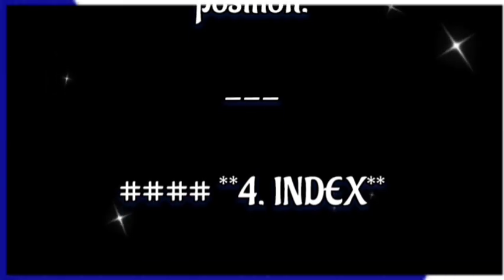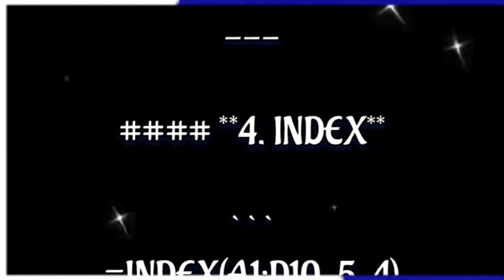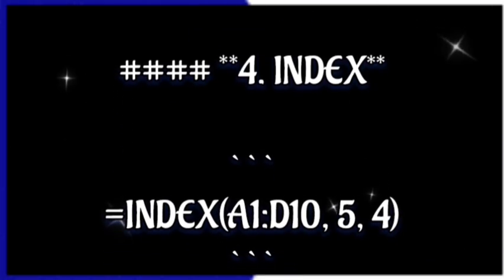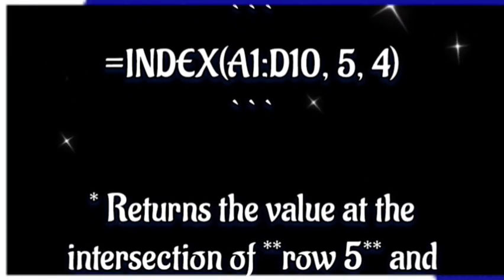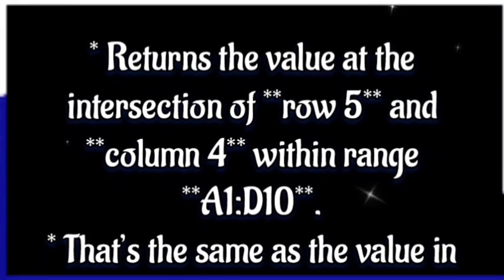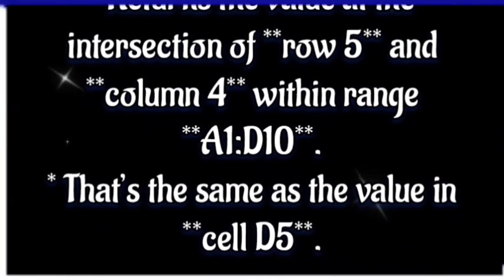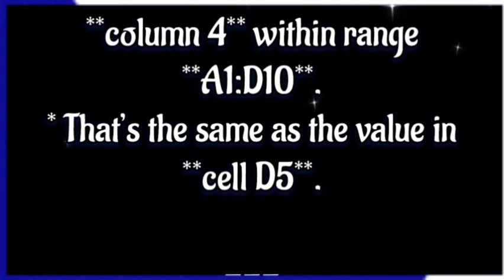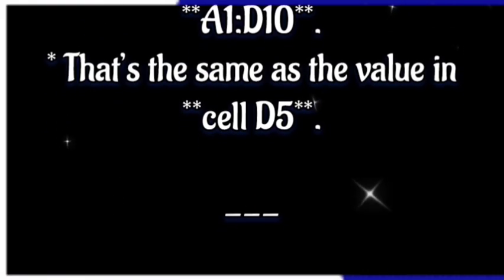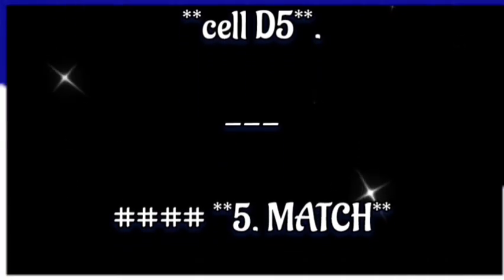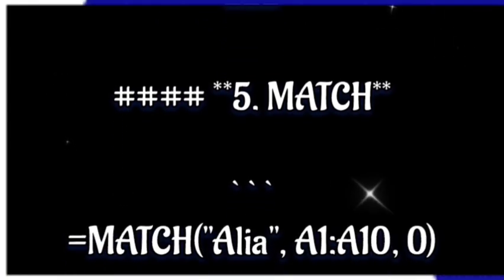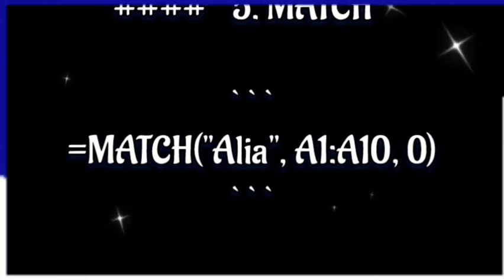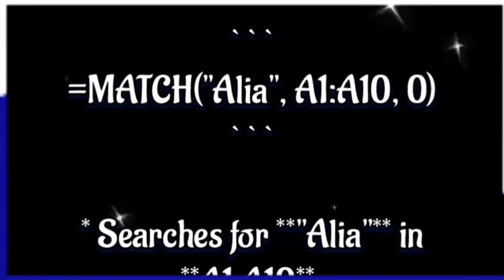Number four: INDEX. INDEX(A1:D10, 5, 4) returns the value at the intersection of row 5 and column 4 within range A1:D10 — that is the same as the value of cell D5.